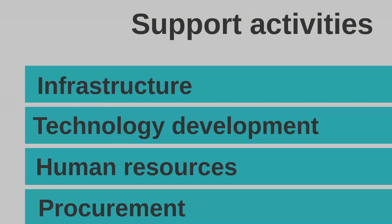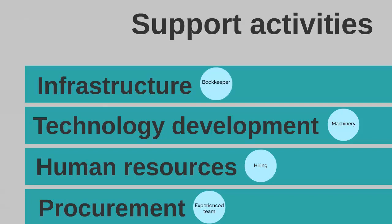We'd also apply the support activities to our car company. For procurement, that would be having an experienced team with good relations with steel companies, oil companies, and all the kinds of companies a car manufacturer needs to deal with. Human resources ensures we have the best people across our procurement and finance teams. Technological development is important since many car companies use large production lines with lots of automation, requiring good quality machinery. Infrastructure covers general accounting and bookkeeping systems that allow the company to add value effectively.